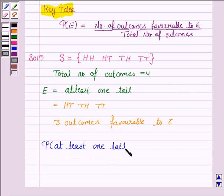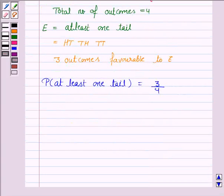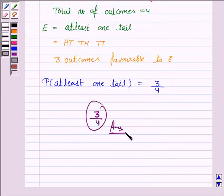So, the probability of getting at least one tail is number of outcomes favorable to E. That is three upon the total number of outcomes that is four. Hence, the probability is three by four.